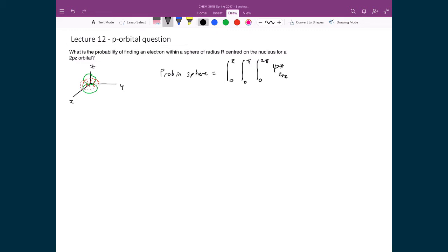Then we have our probability distribution function: ψ*_2pz times ψ_2pz times the volume element r² sine theta dr dθ dφ.